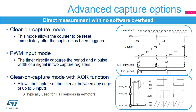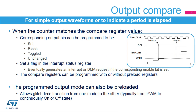Lastly, the timer includes an XOR function to combine the three input channels with XOR logic. This is typically used to handle the three 120-degree phase-shifted signals coming from the hall sensors in electrical motors. This allows a clear-on-capture to happen on each and every edge of the three signals, providing a capture value directly usable for speed regulation.